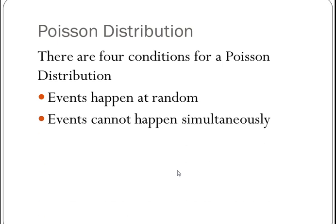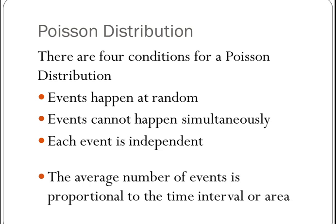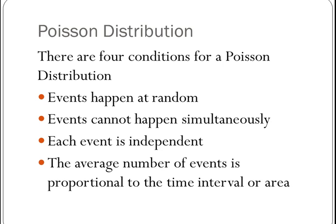The second condition is events cannot happen at the same time, they can't happen simultaneously. The third condition is each event is independent, and I've done those three first because the fourth condition is a bit of a doozy, and that is the average number of events that happen is proportional to a time interval or area, and that kind of gives you a huge clue about what the Poisson distribution is about. It's about time intervals and areas, and it also tells you an average.